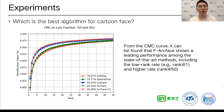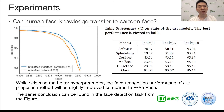Firstly, we propose the question: which is the best algorithm for cartoon face? From the figure, it can be found that F-archive achieves leading performance among state-of-the-art methods. Then, can human face knowledge transfer to cartoon face? By selecting better parameters, the face recognition performance of our proposed method is slightly improved compared to the F-archive baseline. The same conclusion can be found in the face detection results from the figure.